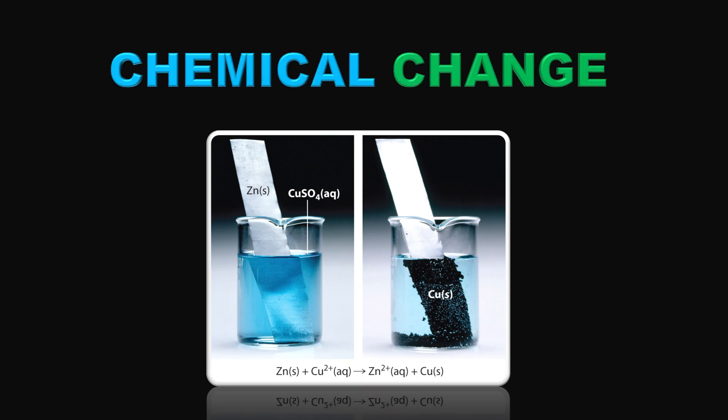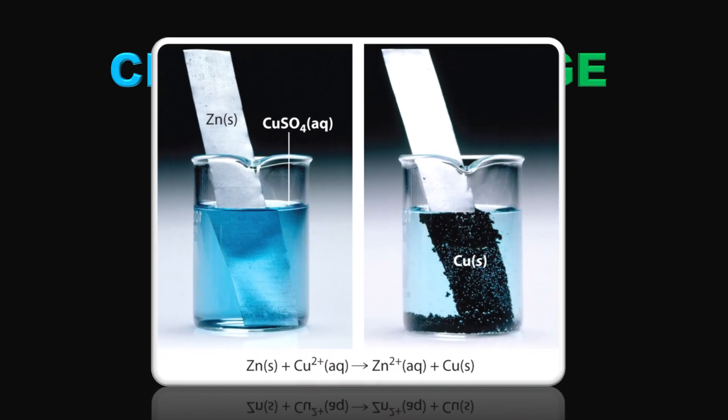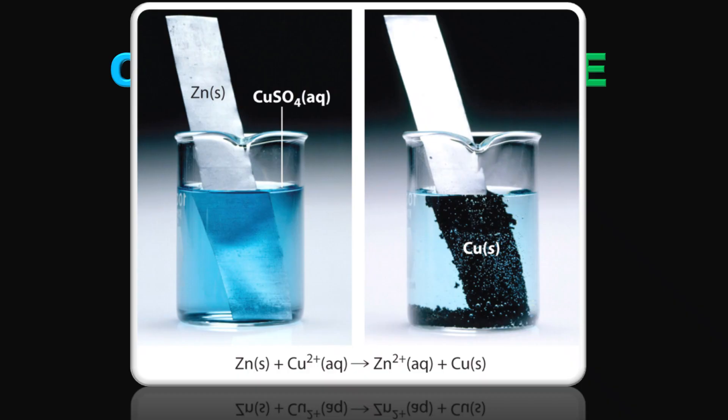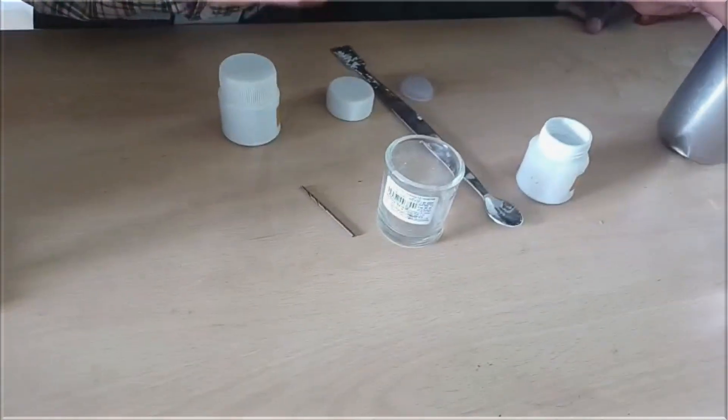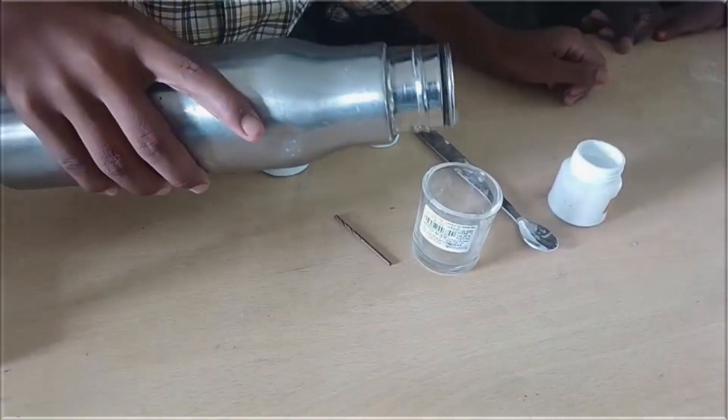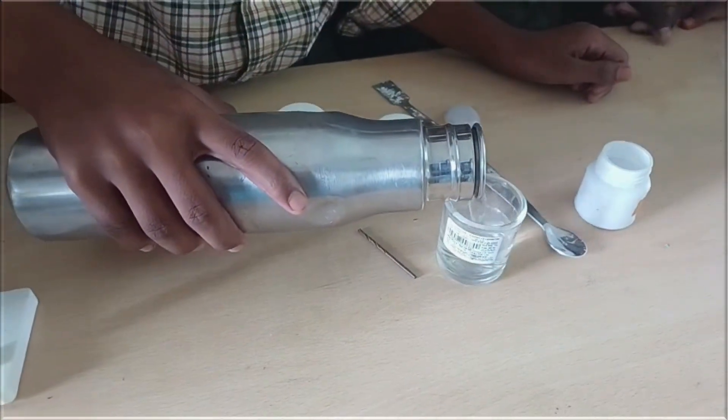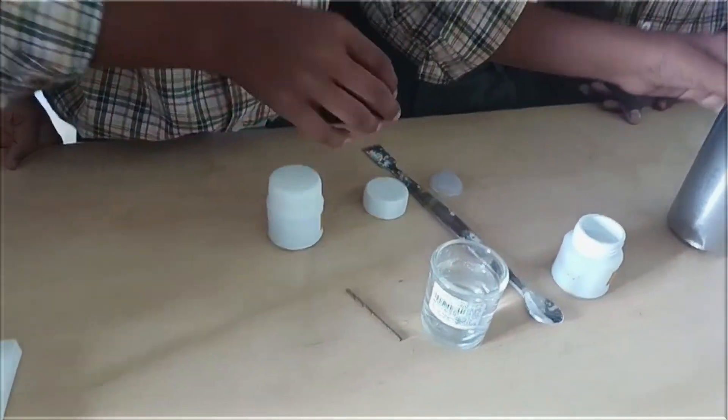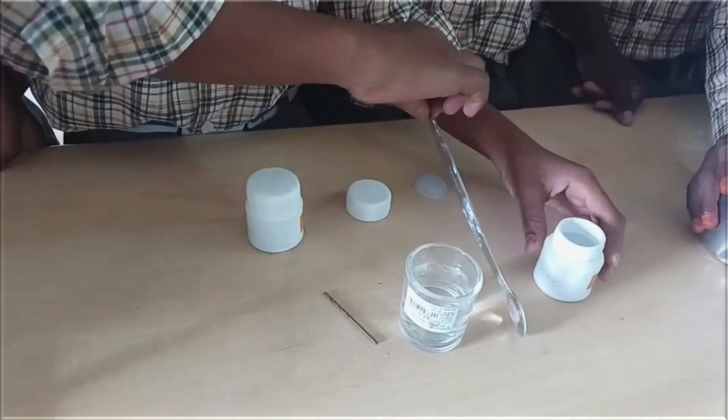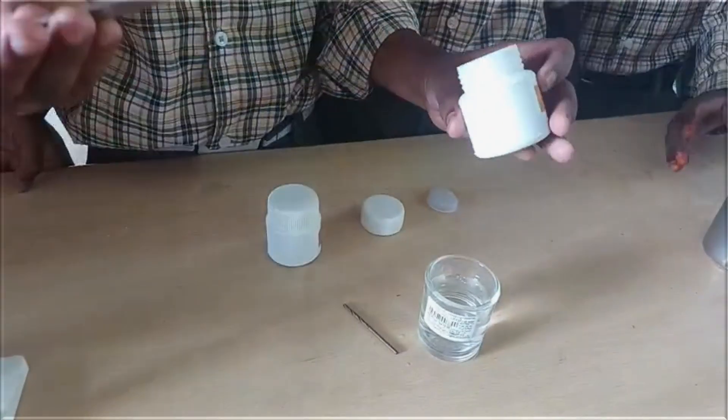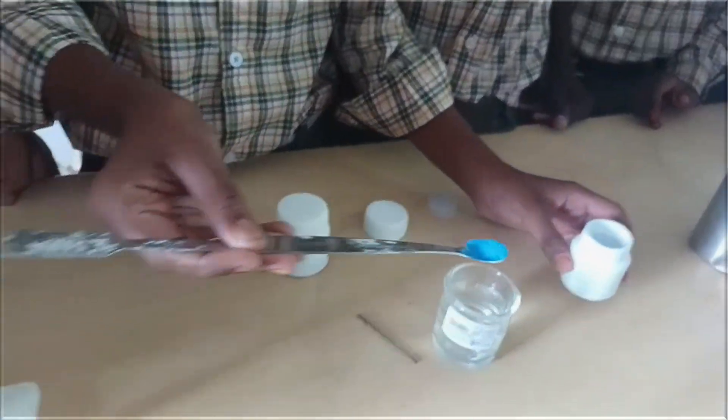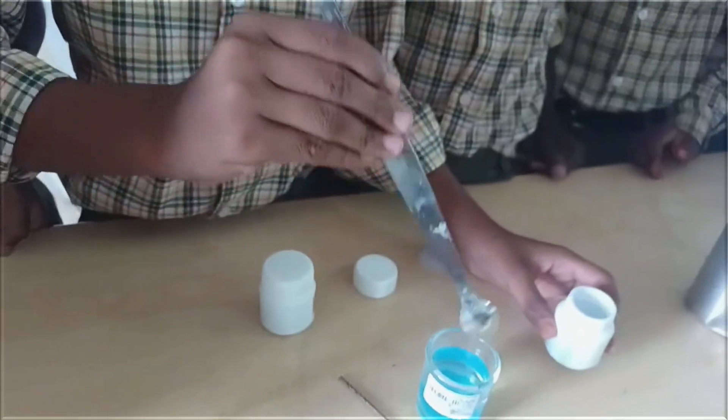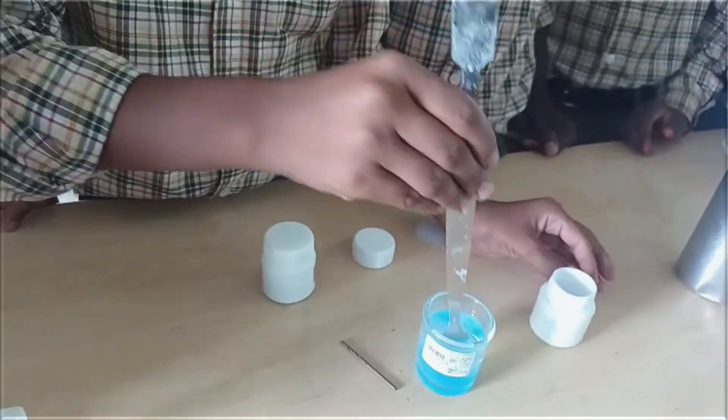Hi everyone, in this video we are going to learn about chemical change. They are our seventh class children. They are going to perform an activity by using copper sulfate. He dissolved about a teaspoonful of copper sulfate in a cup of water.